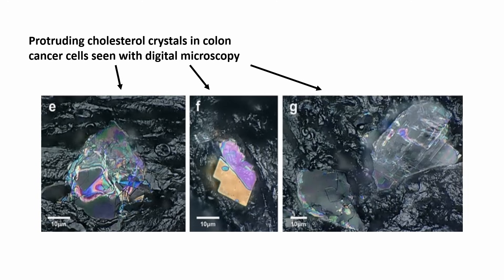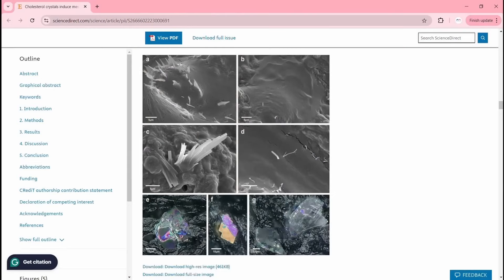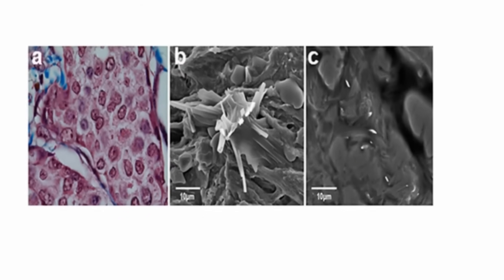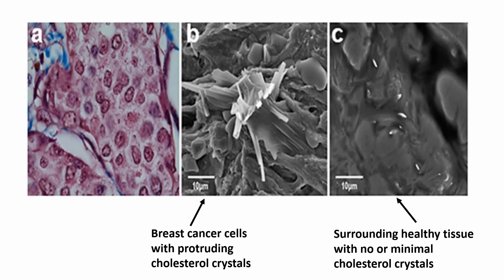They also did breast cancer cells and found the same thing. They have a light microscopy image confirming pathological diagnosis of breast cancer, then they showed the cancer cells and you see those cholesterol crystals poking right through. Again, in the area beyond or away from the cancer cells, there are no crystals or very minimal amounts compared to what was observed in the cancer cells. Very evident that cancer cells actually build cholesterol crystals, just like atherosclerotic plaque — that's the commonality.